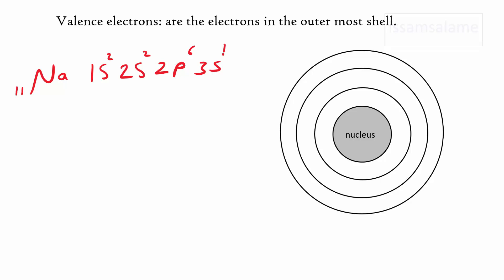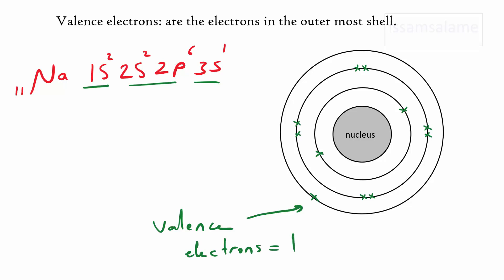From the electronic configuration of sodium, we can see that it has two electrons in the first energy shell, eight electrons in the second energy shell, and only one electron in the third electronic shell. So we can say that sodium has one valence electron since it has only one electron in its outer electronic shell.